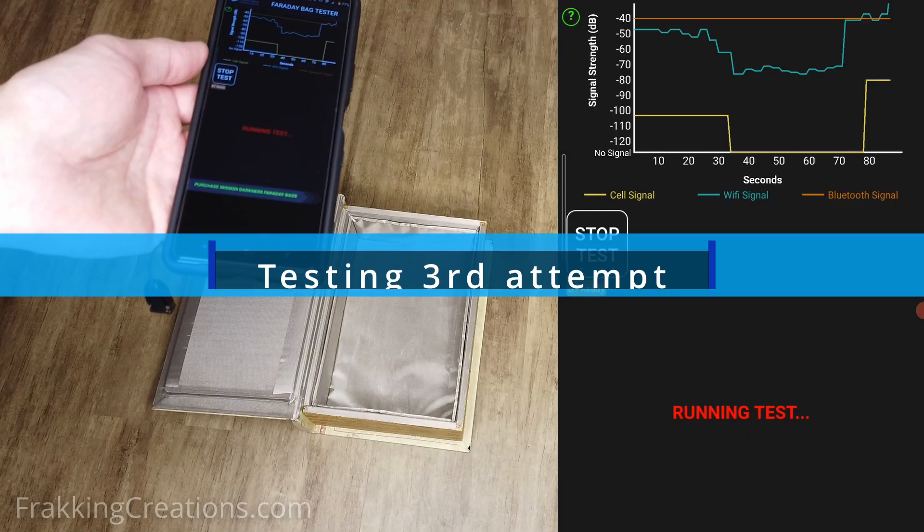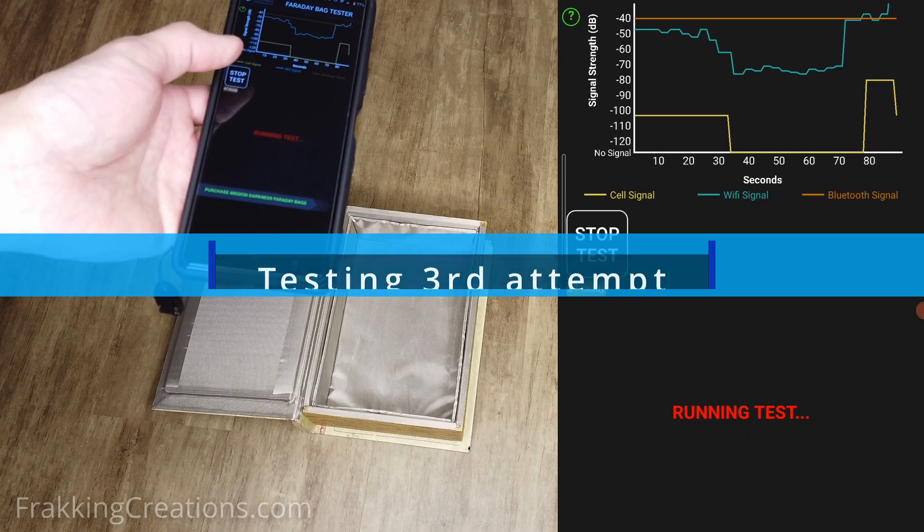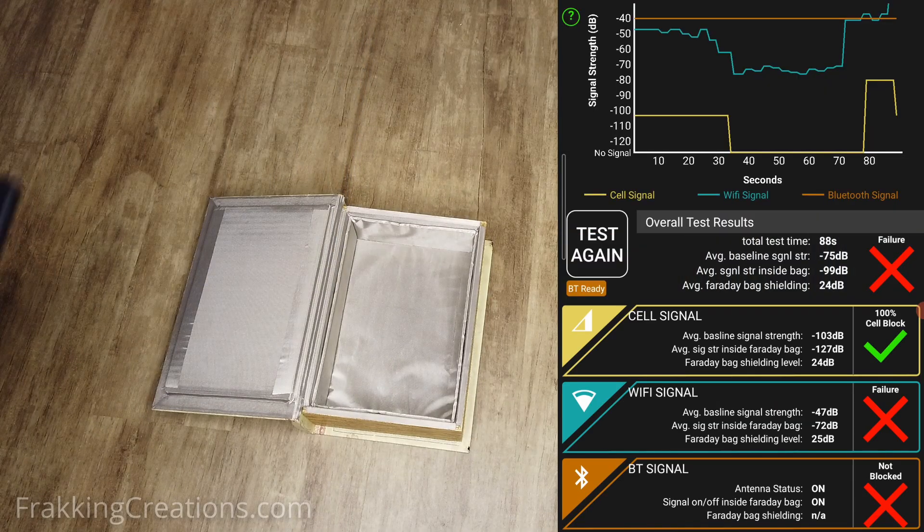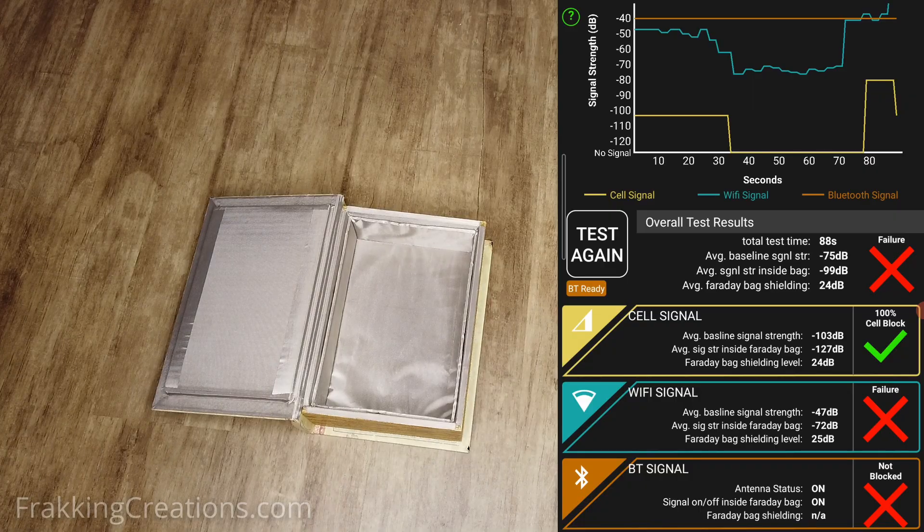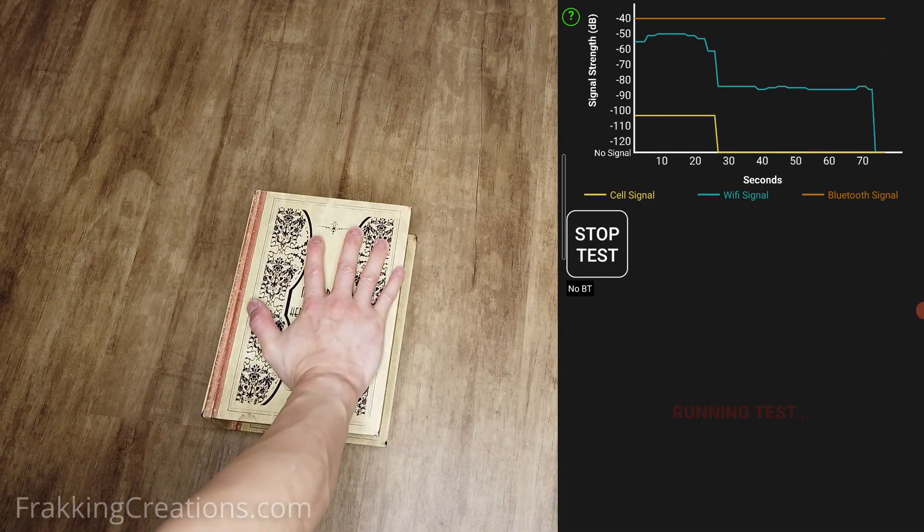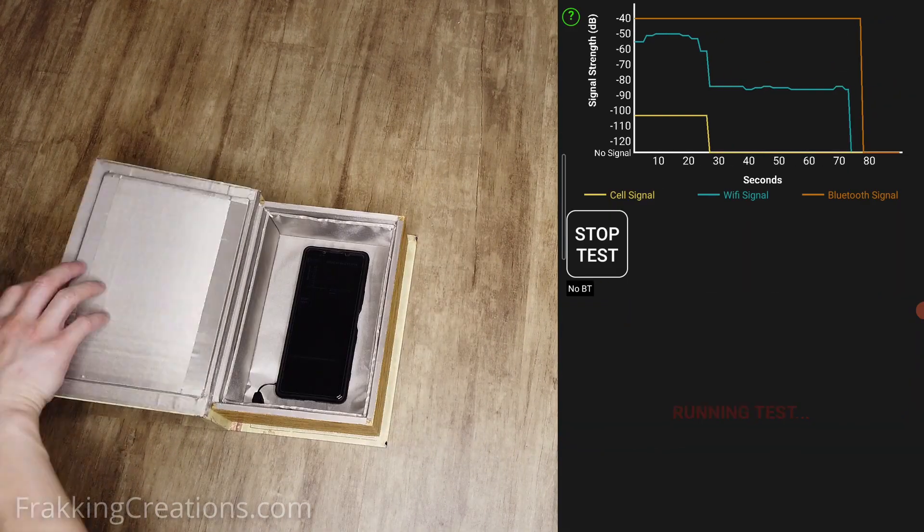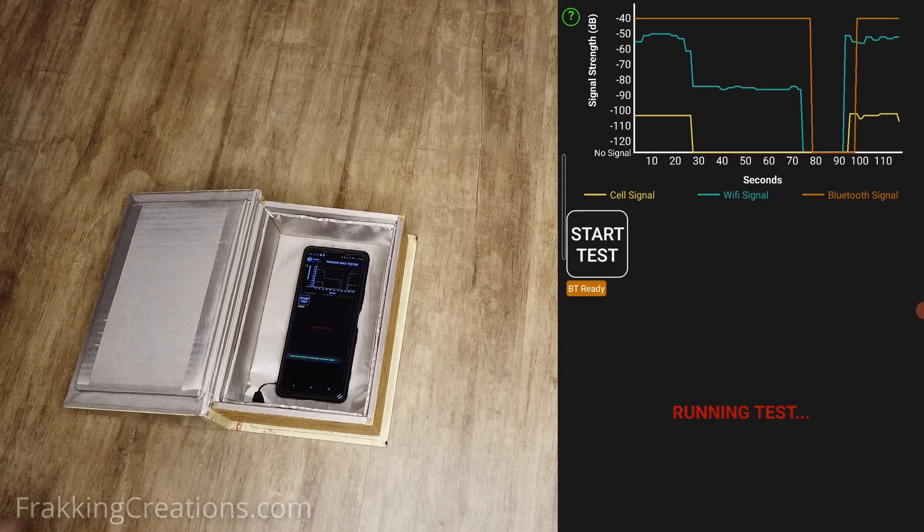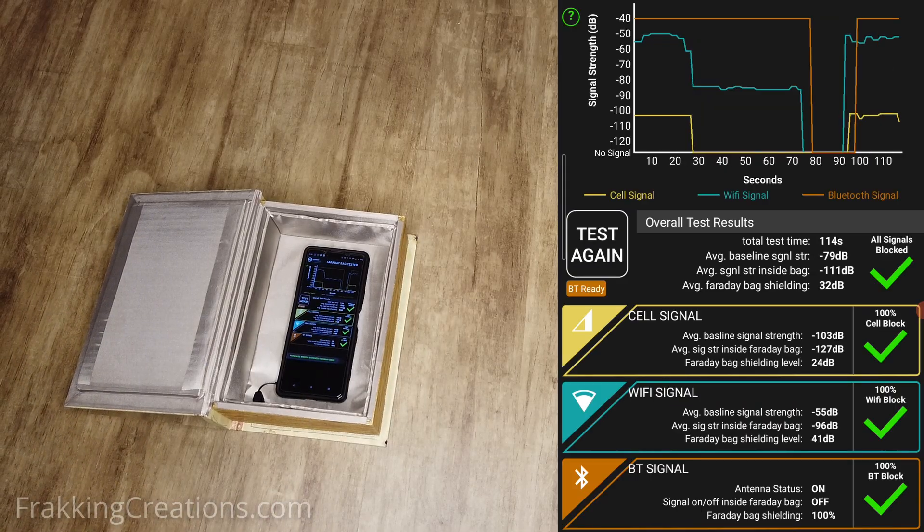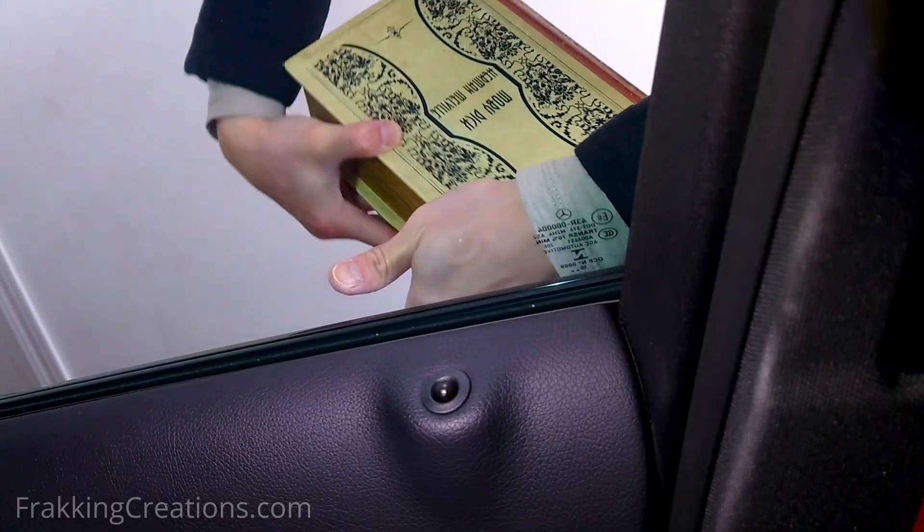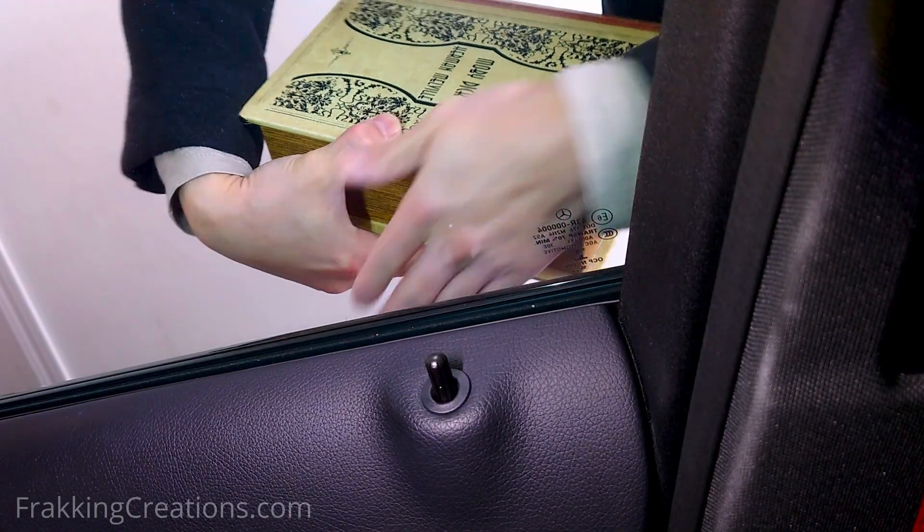Testing third attempt. Unfortunately testing reveals that Bluetooth and Wi-Fi are still not fully blocked. It looks like the lid is still the main culprit. I verify this by pressing down on the lid while testing and we then get the desired result. When testing the fob it also shows that the signal leak is coming from the front of the box.